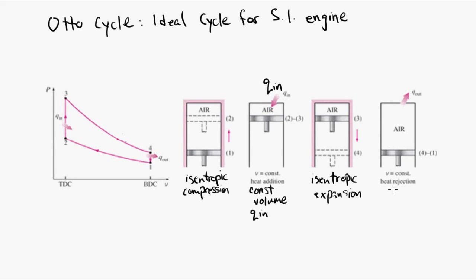And then the fourth stage is heat removal at a constant volume. And you can see this ideal cycle on the left on the PV diagram. So here, from one to two is the isentropic compression. From two to three is the heat input, representing combustion at constant volume. Three to four is isentropic expansion.